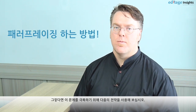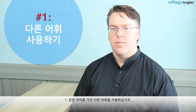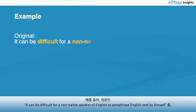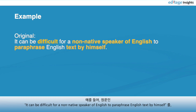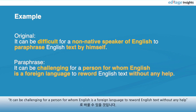These strategies will help you overcome this hurdle. Number one, use different vocabulary with the same meaning. For example, in the original text: 'It can be difficult for a non-native speaker of English to paraphrase English text by himself.' As a paraphrase: 'It can be challenging for a person for whom English is a foreign language to reword English text without any help.'